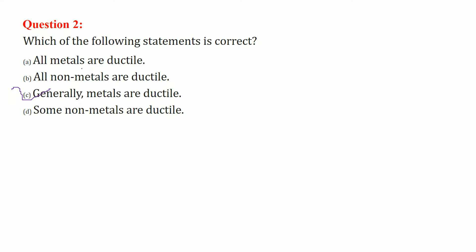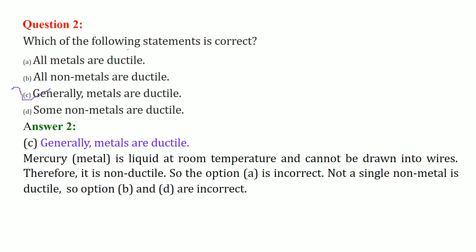We'll see why C. Mercury, for example, is liquid at room temperature and cannot be drawn into wires, therefore it is non-ductile.